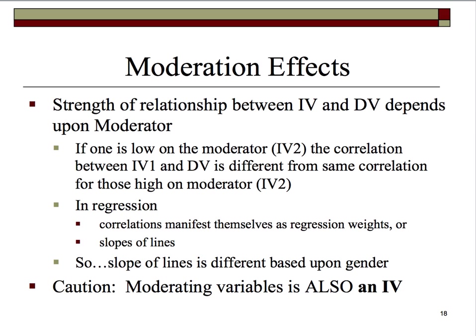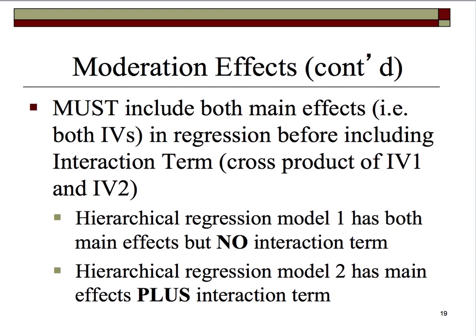In multiple regression, we can also examine the moderator — in this example IV2 — as a continuous variable. These correlations tend to manifest themselves as regression weights or slopes of the lines, so those slopes might be different if gender is our moderating variable. Remember, gender or moderating variables in general are also IVs.